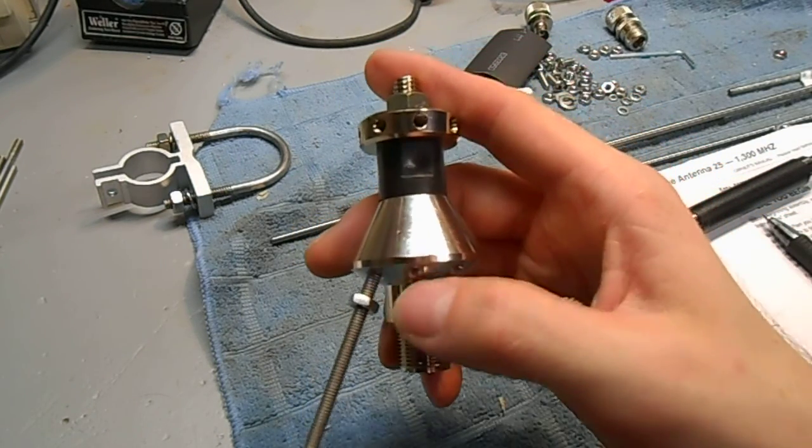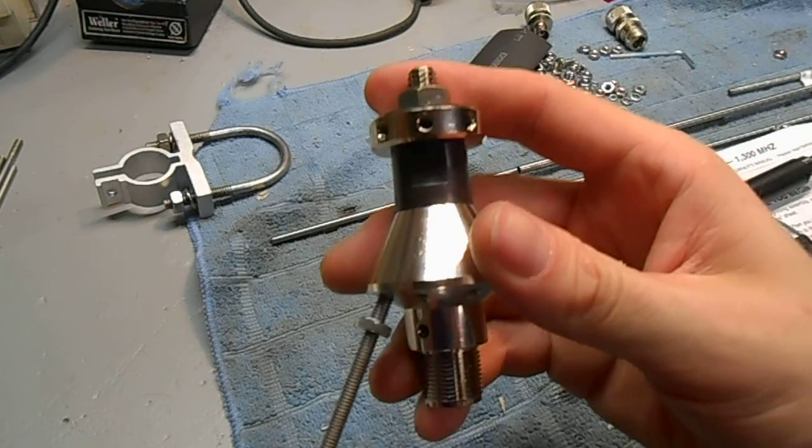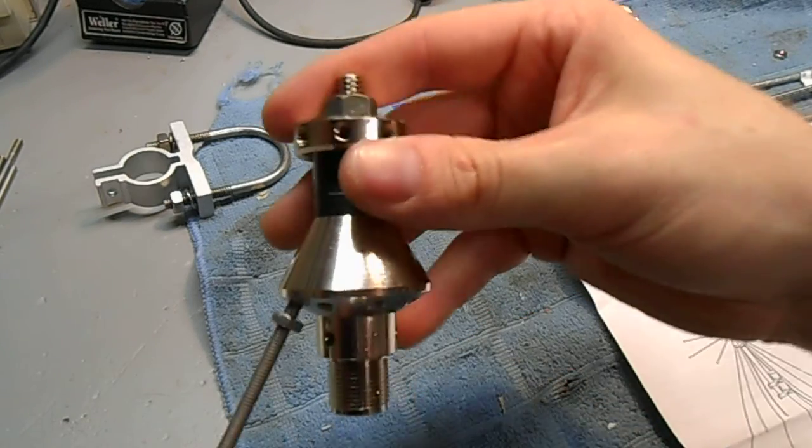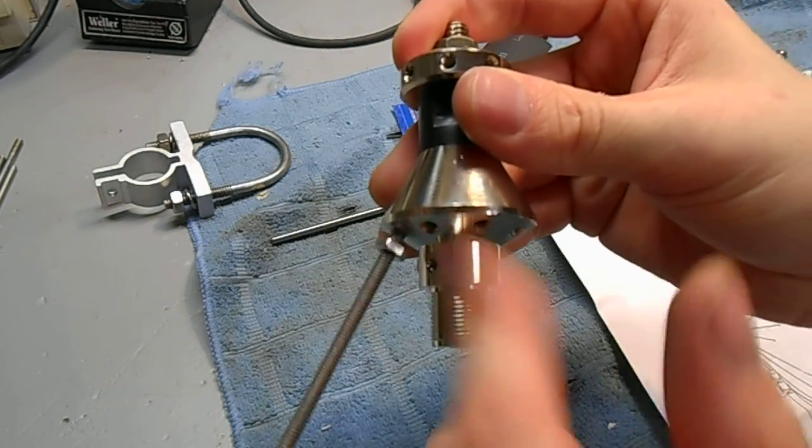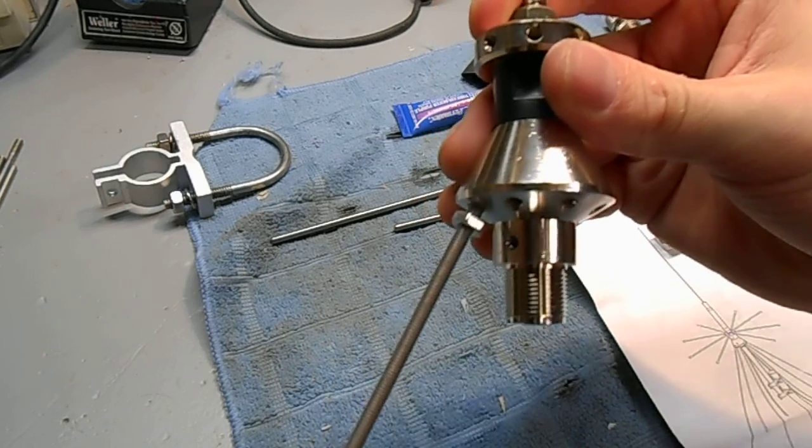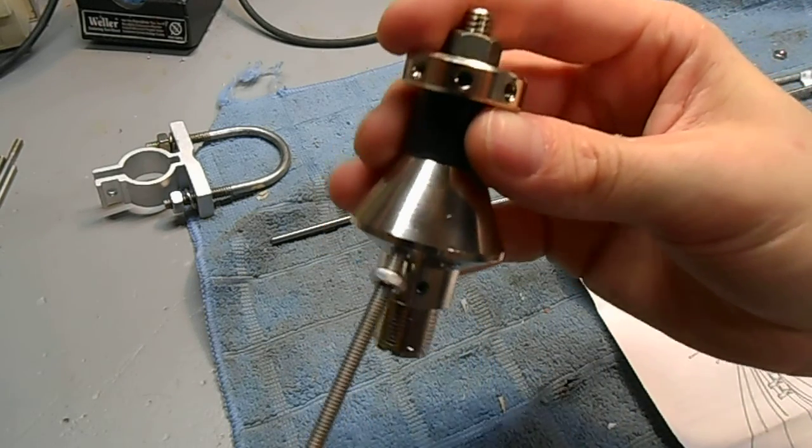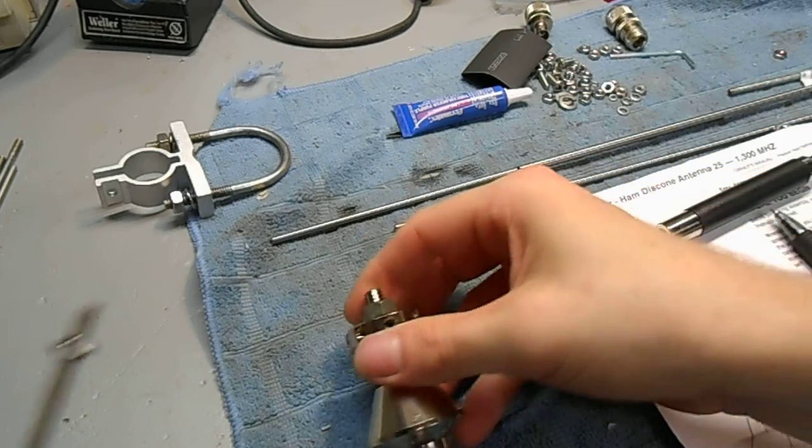You still want to add a little bit of Loctite onto the threads and use the locking nut. That'll make a really secure connection. And it should last through snow storms or wind storms or stuff like that.